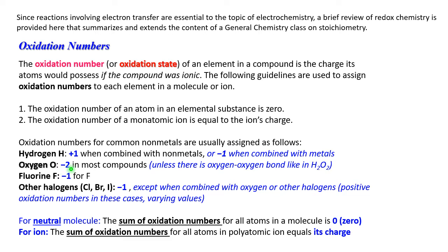Oxygen: always -2, unless you have a compound with oxygen-oxygen bond like in H₂O₂. Fluorine: always -1. Other halogens (Cl, Br, I): -1, except in oxygen-containing compounds or compounds with other halogens.